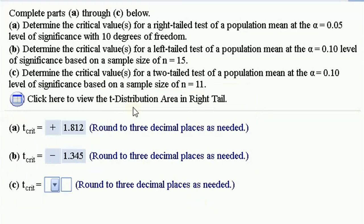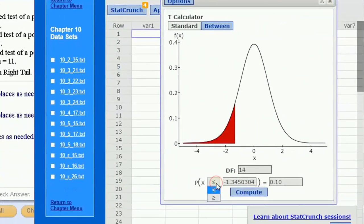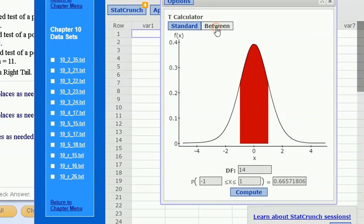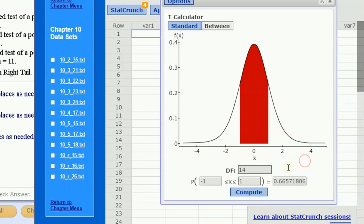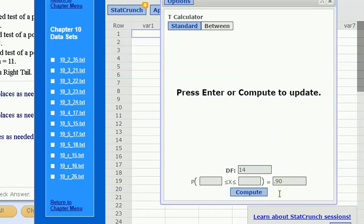And here now, I've got a two-tailed test with alpha at 0.10 and with a sample size of 11. Let's get it all in. We've got two-tailed. For two-tailed, I have to go to the between calculator. Now I want the probability out in the tails to be 0.10. The only way to get that with the t-calculator is to use the complementary probability. That means I want 0.90 in between.